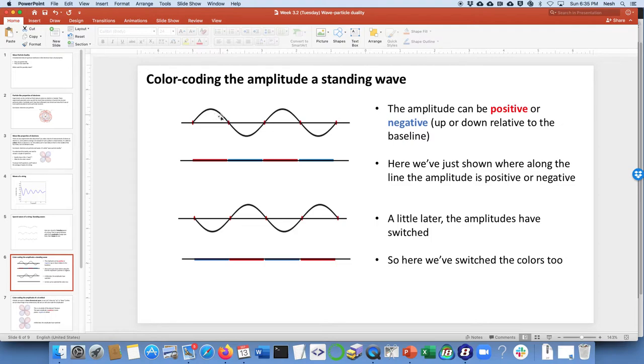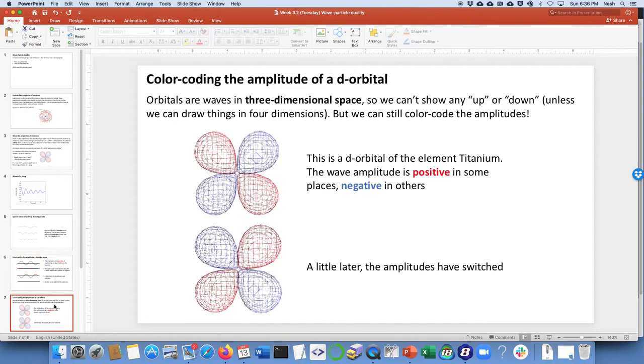If I just waited for a little bit of time on this standing wave, when it's positive here, a little bit later it would be negative. So I would want to code that as blue for this part of it. Red, blue, red. The main point is that the amplitude of a wave can be positive or negative, up or down relative to the baseline if it's a string. And we're just color coding it as red or blue to indicate whether that segment of the string has positive amplitude or negative amplitude.